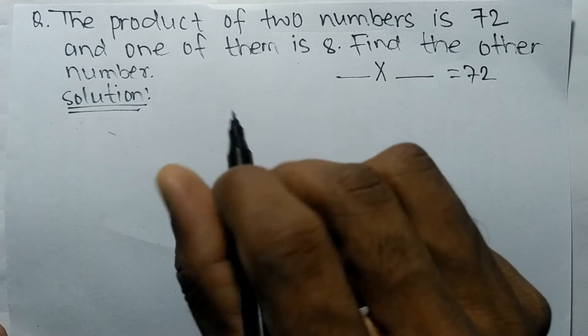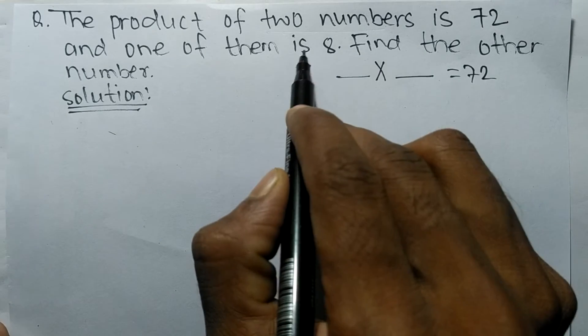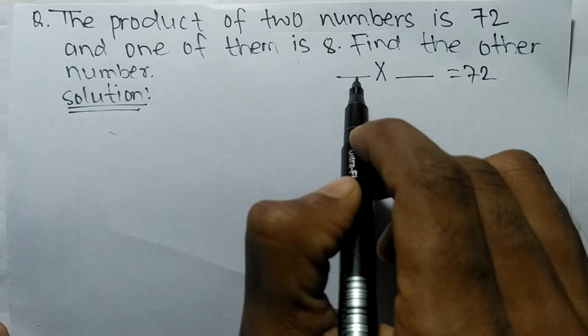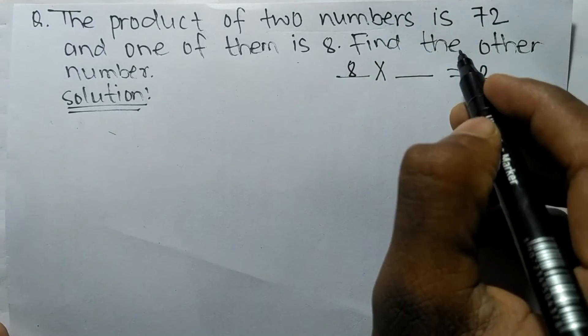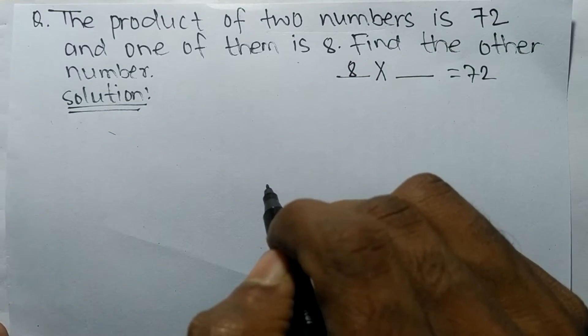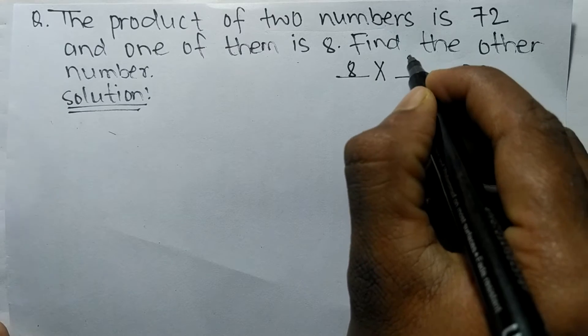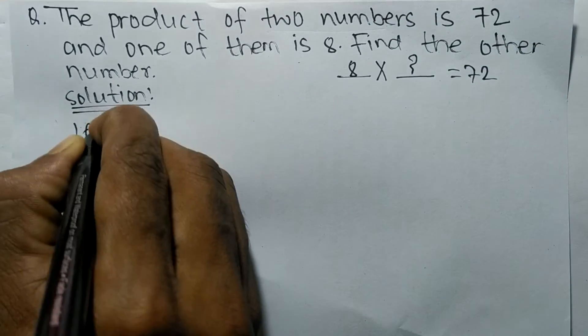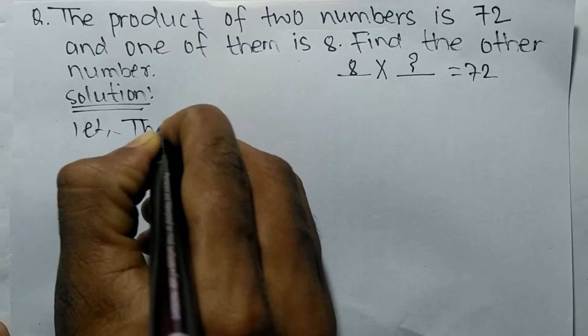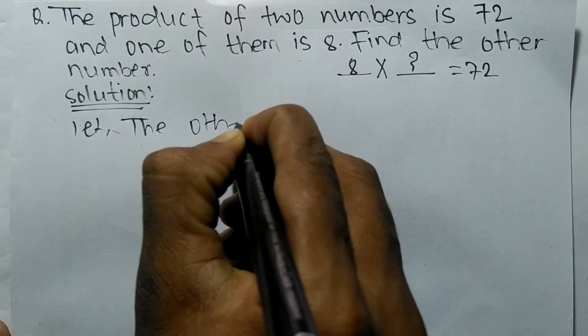In the second condition we have one of them is 8, so among these both numbers one number is 8. Find the other number, so we have to find out the other number.